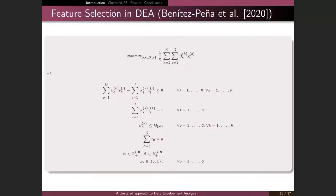In order to reduce the number of inputs and outputs, we propose in this published paper a new formulation of DEA in which we reduce the number of features. We have a constraint saying that the number of outputs to select is equal to p. It can also model the number of inputs, or the number of outputs and inputs simultaneously.